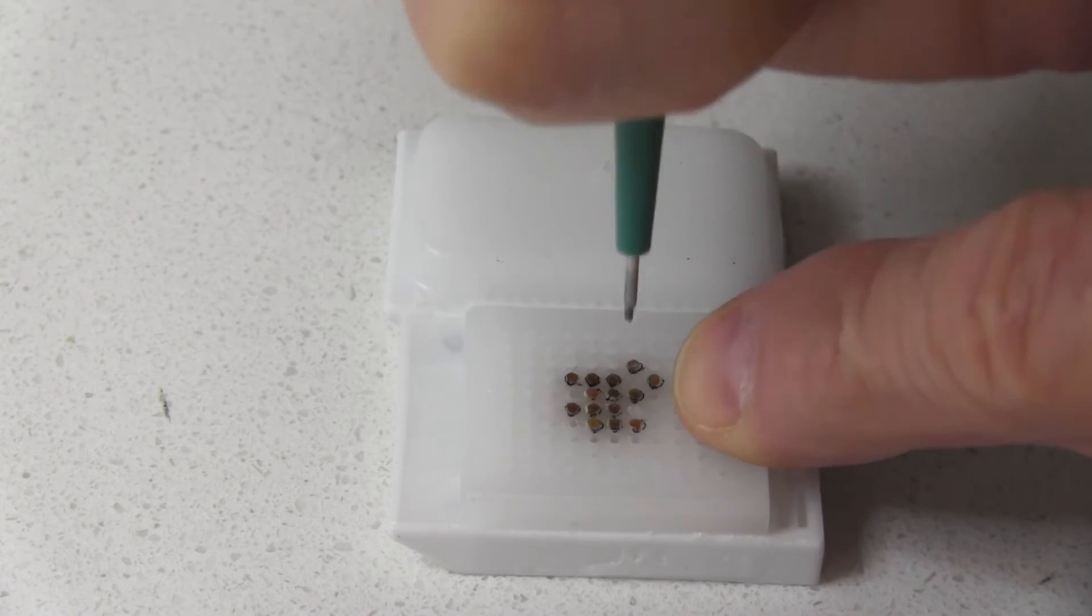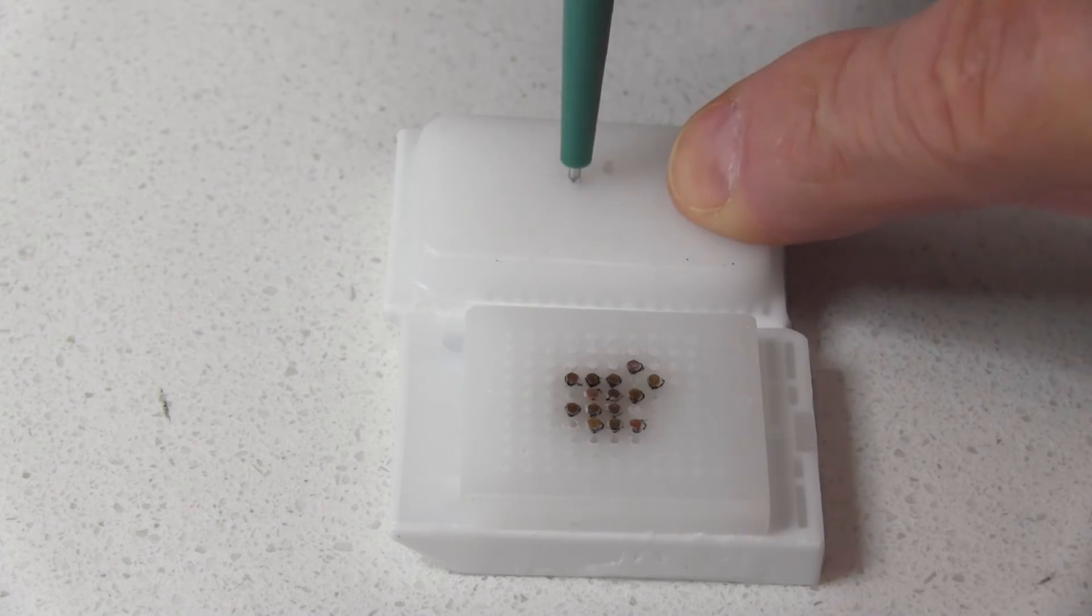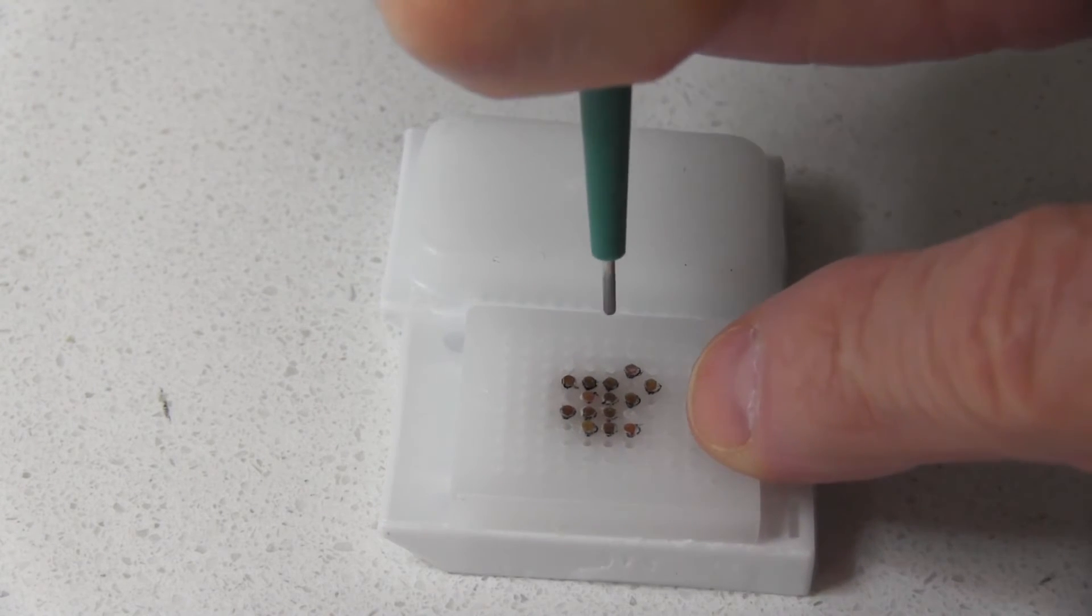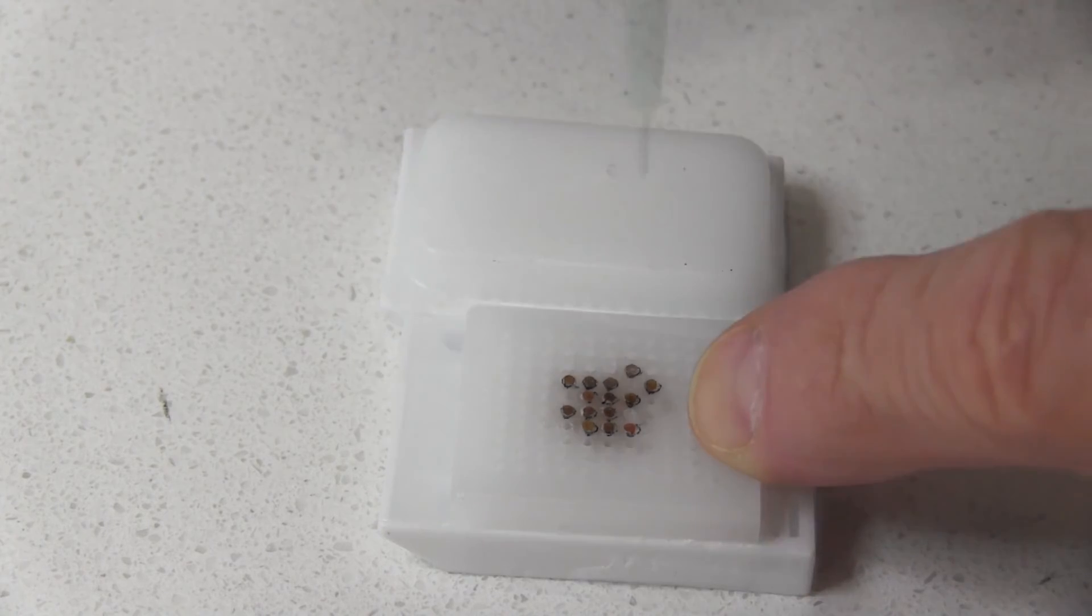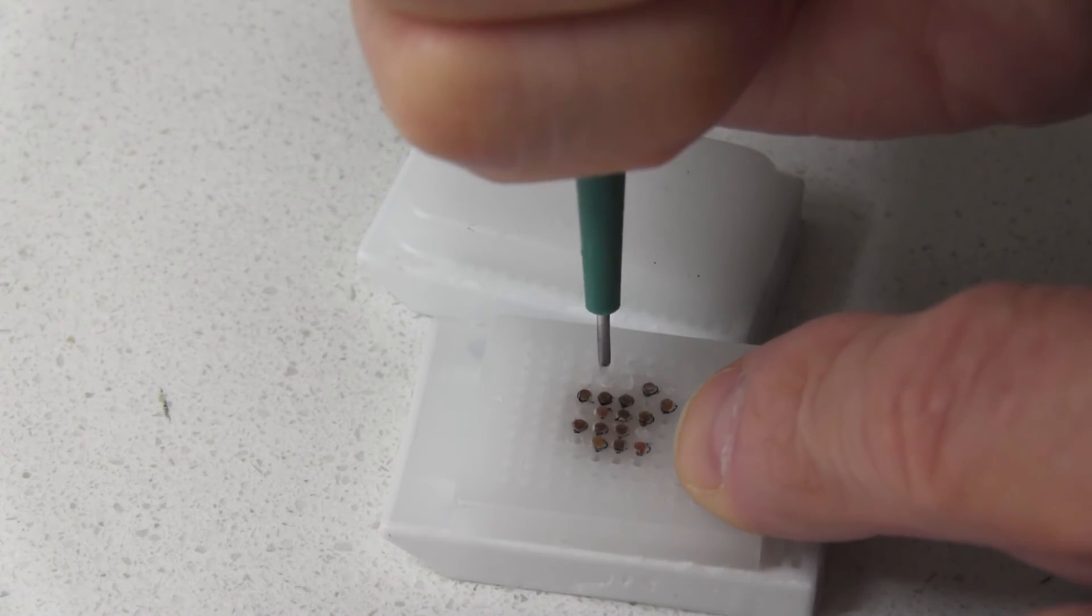Filling the blank spots with paraffin may feel tedious but it's very important for the structural integrity of your TMA block. This is easy to do and it's good practice for getting your punch techniques down.